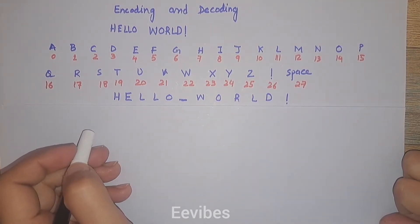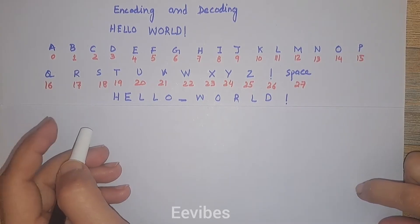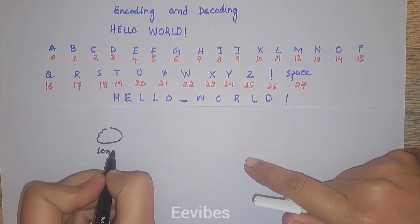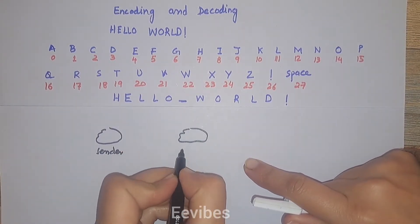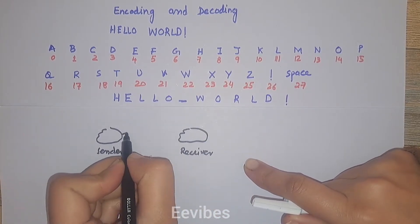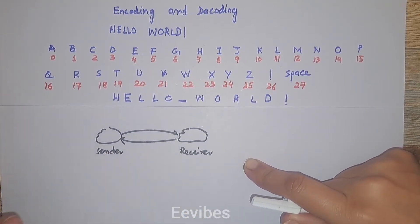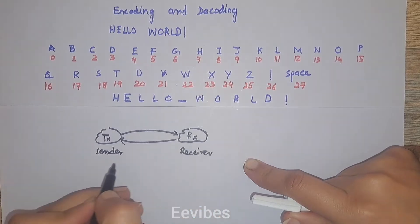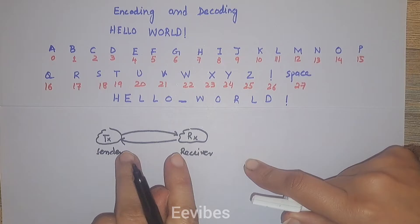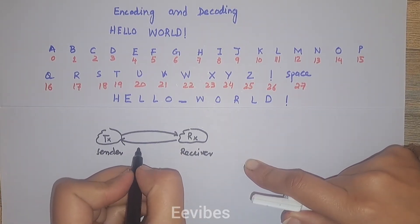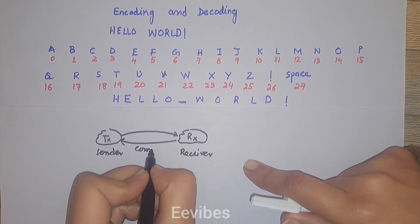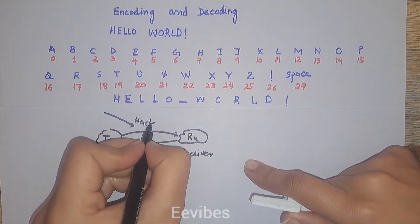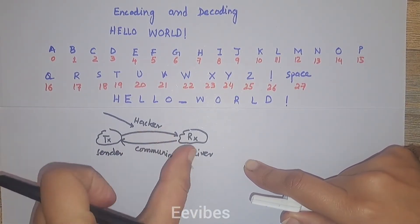Assalamu alaikum, I am Asma Mushtaq from EE Vibes. In this tutorial I am going to explain an application of linear algebra for the encryption and decryption of a message. Assuming there is a sender and a receiver who want to communicate with each other over a particular communication link or channel. A third party, named the hacker, wants to retrieve the information they are sharing with each other.